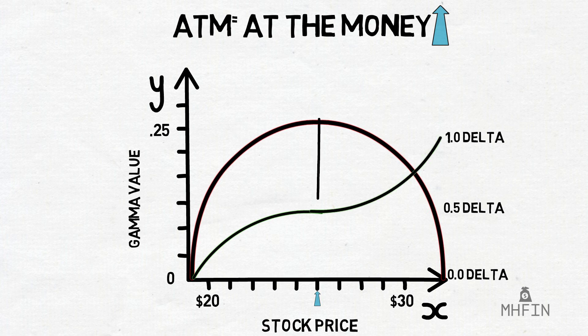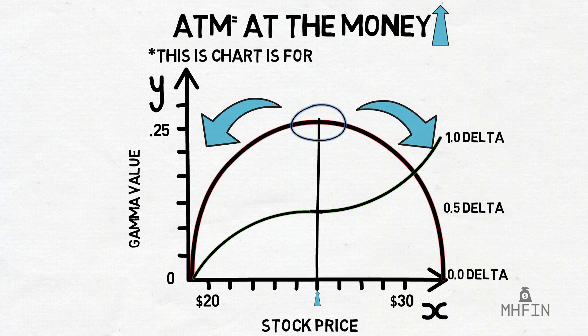Gamma is the largest when the option is near the at-the-money price. This is easily shown on the graph as circled here. It gets smaller as the option is either deep in the money or out of the money. This is why our plot forms a half circle, reaching its peak at the at-the-money price and then sloping down to zero when the stock price is either deep out of the money or deep in the money.